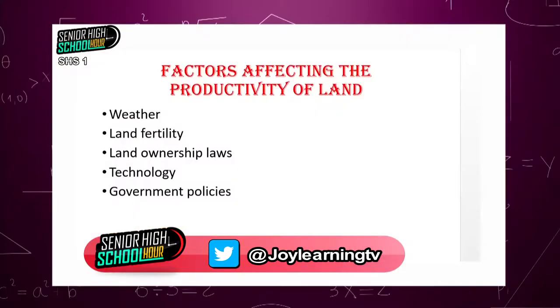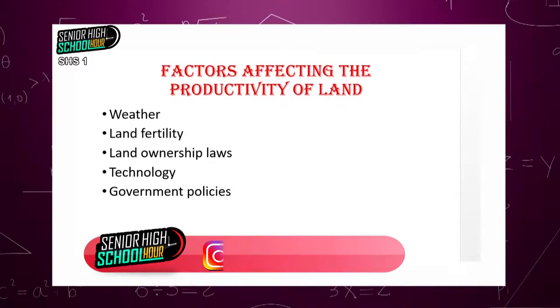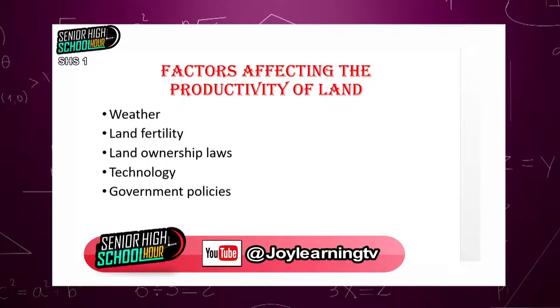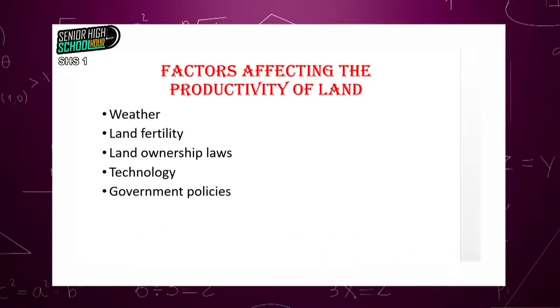Government policy also affects productivity of land. If government gives policies that create an enabling environment for productivity of land to manifest in a positive way, then it will do so. If government gives out credit facilities with lower interest, if government gives out incentives to developers of land and farmers, land is going to be very productive. If government itself also puts up policies directly involving the government in productivity of land, it will affect productivity positively — otherwise, it will take a downturn.